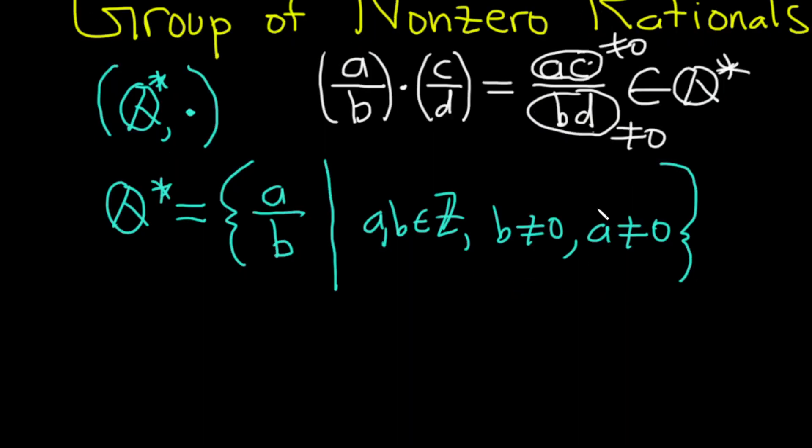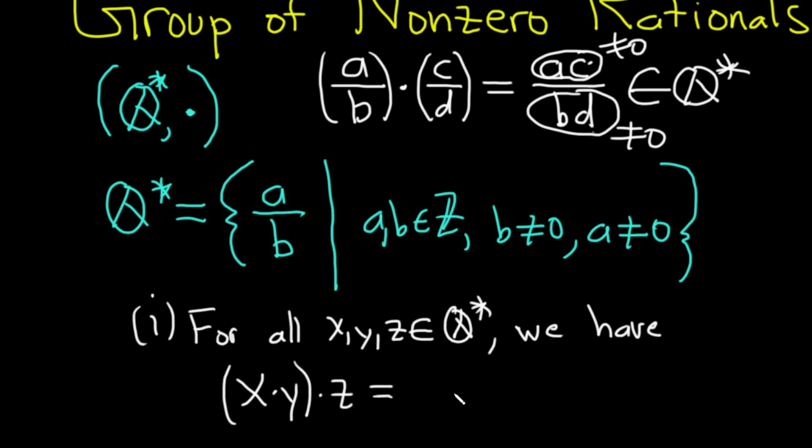In order for it to be a group, it has to be associative. So let me just briefly write down what that would mean in this particular case. And I'm going to avoid the cumbersome notation of fractions. So for all, let's just call them XYZ, we know that they can be expressed as fractions in the form A over B, where A and B are integers and neither are zero. So for all XYZ in this set here of non-zero rationals, we have this property, it's called the associative property. So if you have X times Y and then you multiply it by Z, that's the same thing as doing X times Y times Z. So the order should not matter.